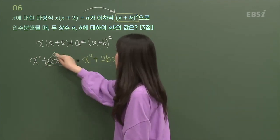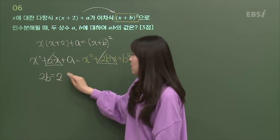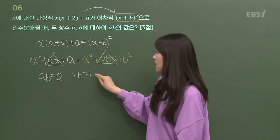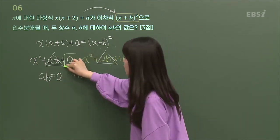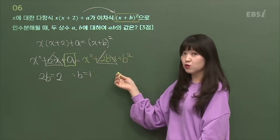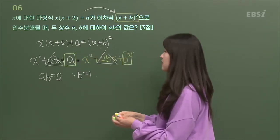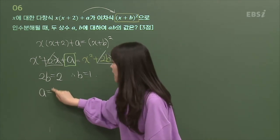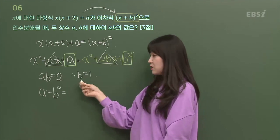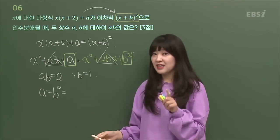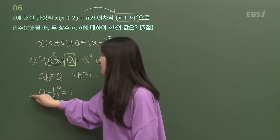2X하고 2BX가 같으려면 결국 2B가 1이어야 되니까 B가 1이면 되겠다. 이제 마지막. 나 여기서 A였어. 상수항. 여기서 상수항 누구야? B제곱. 근데 둘이 역시나 같아야 되지. 따라서 A는 B제곱이지. 근데 나 B 구했는데 방금. B 몇이었어? 1. 그러니까 그거 제곱하니까 1. 따라서 B는 1, A도 1.